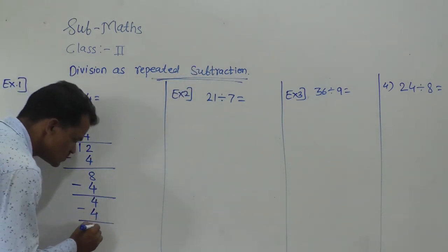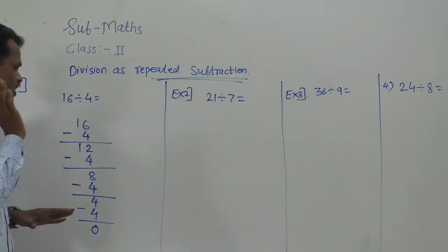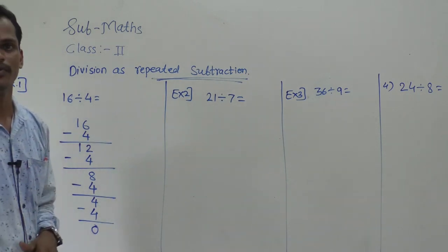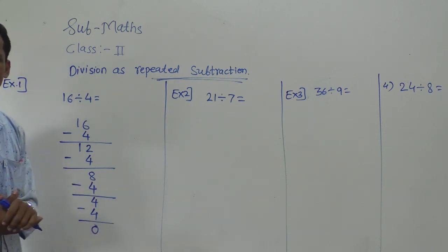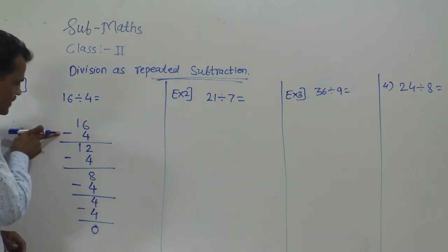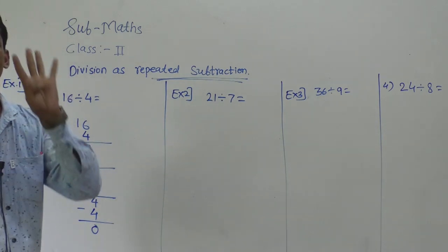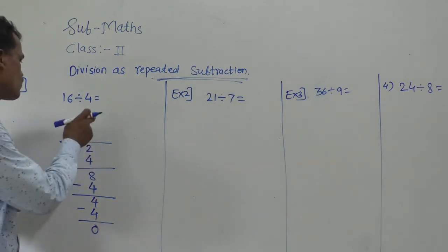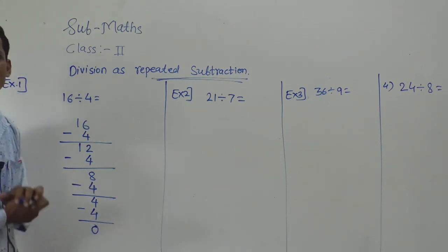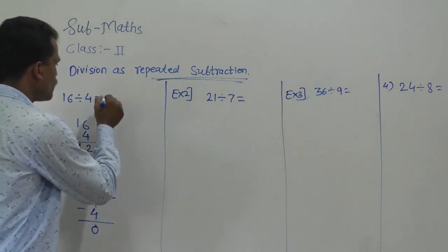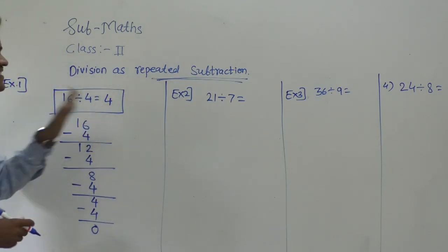So, 4 minus 4 is 0. Now, count how many times you subtracted the divisor until you got 0 as the remainder. Count: 1 time, 2 times, 3 times, and 4 times — we subtracted 4 four times from 16 and got 0 as the remainder. So, 4 is the quotient, the answer to this sum.